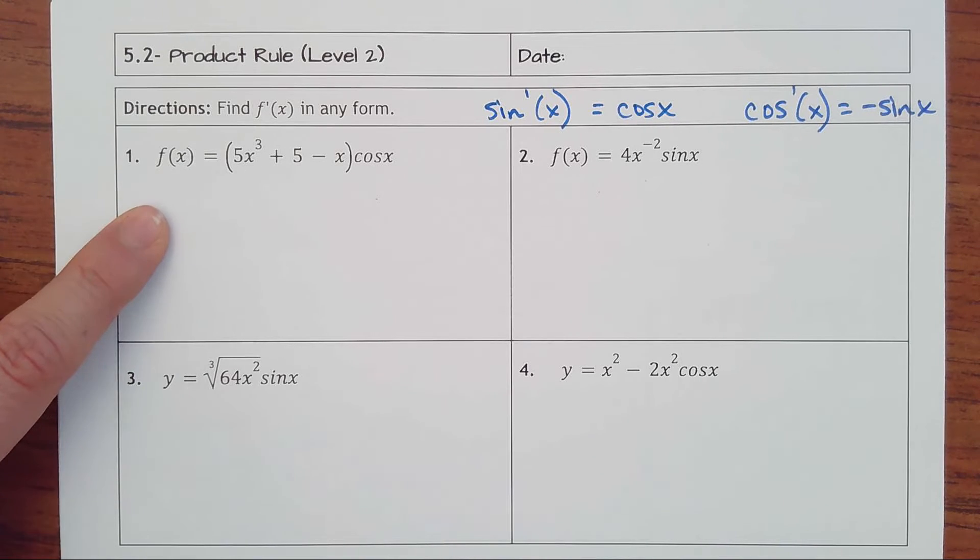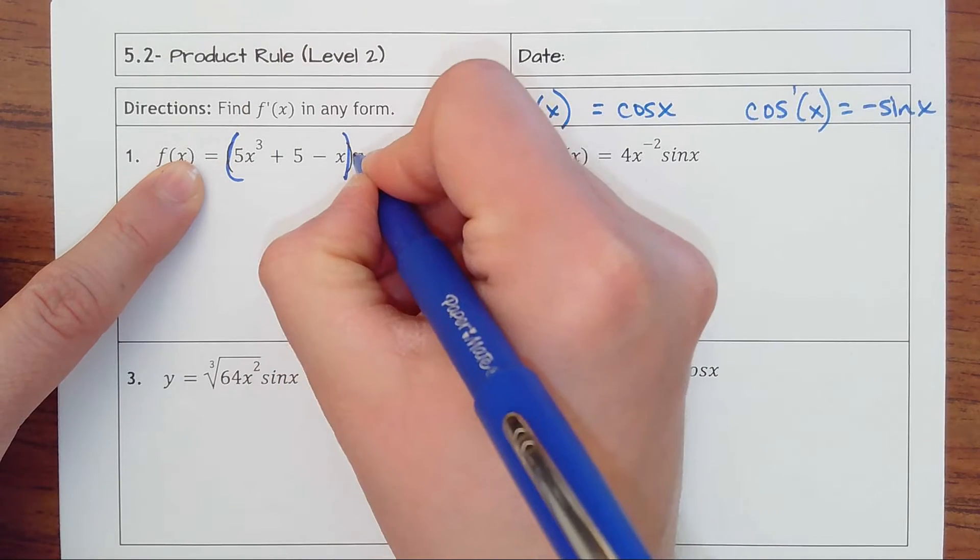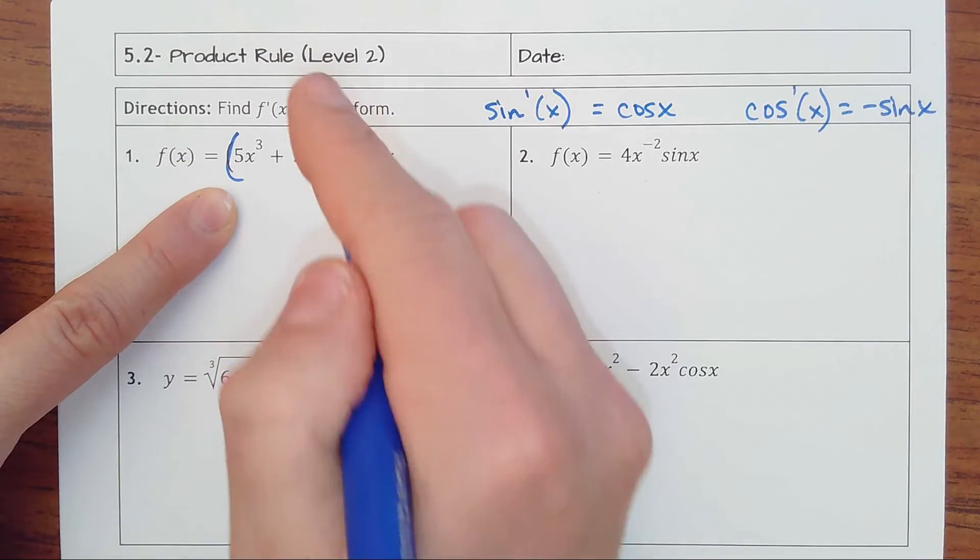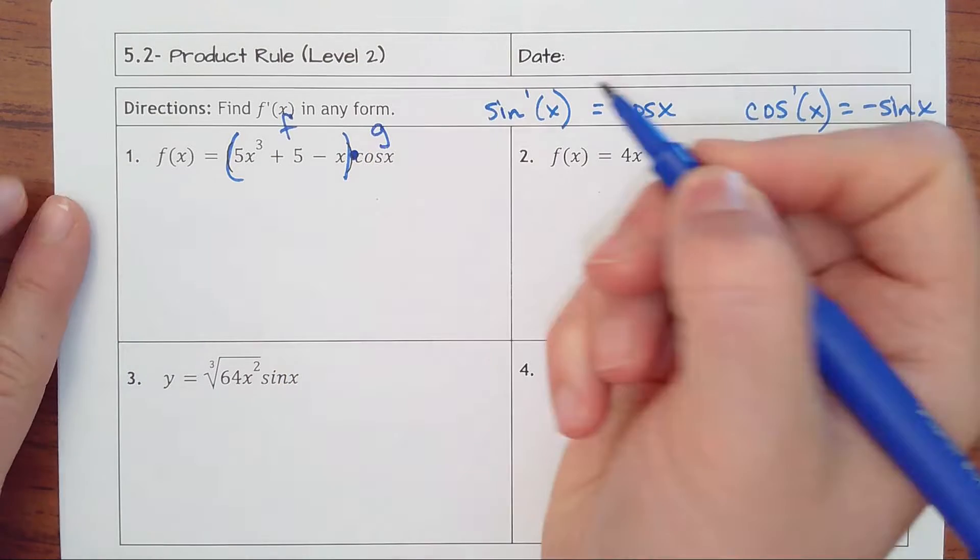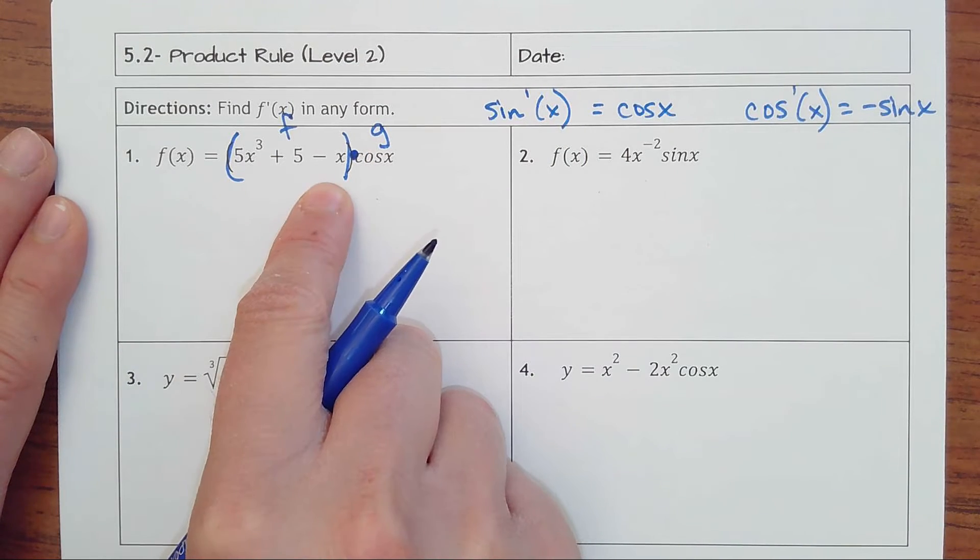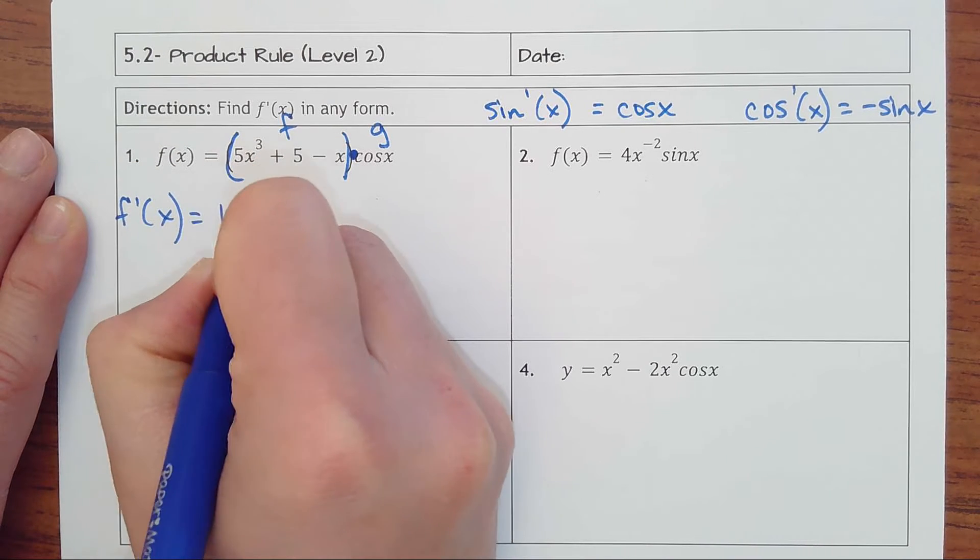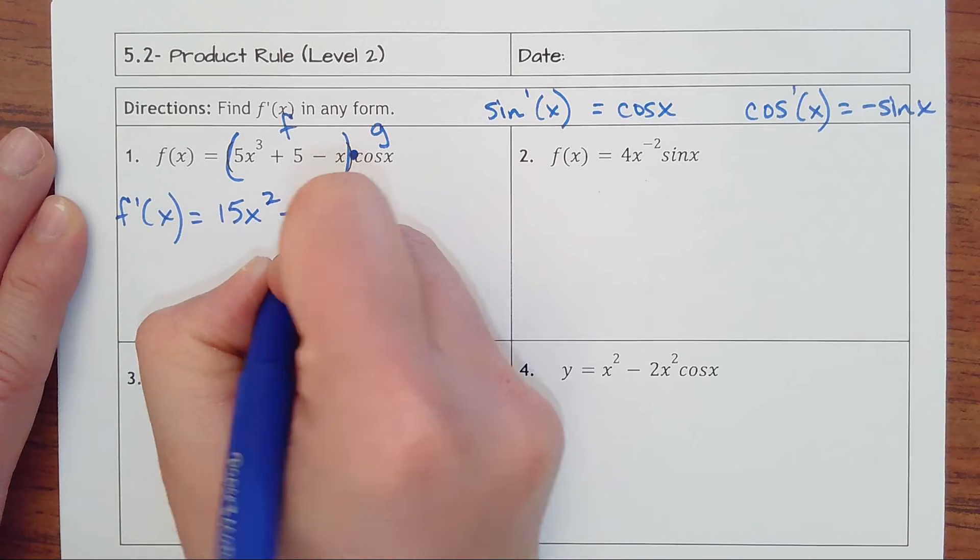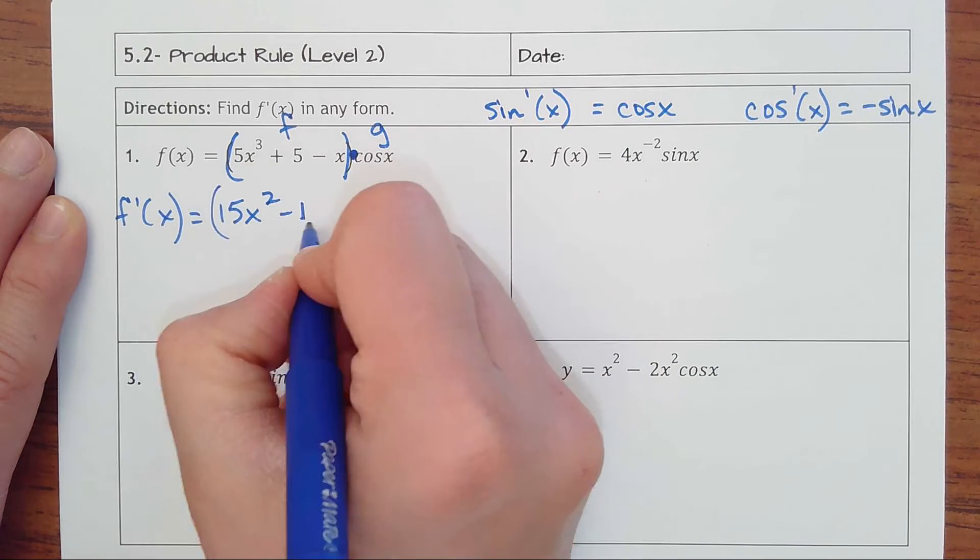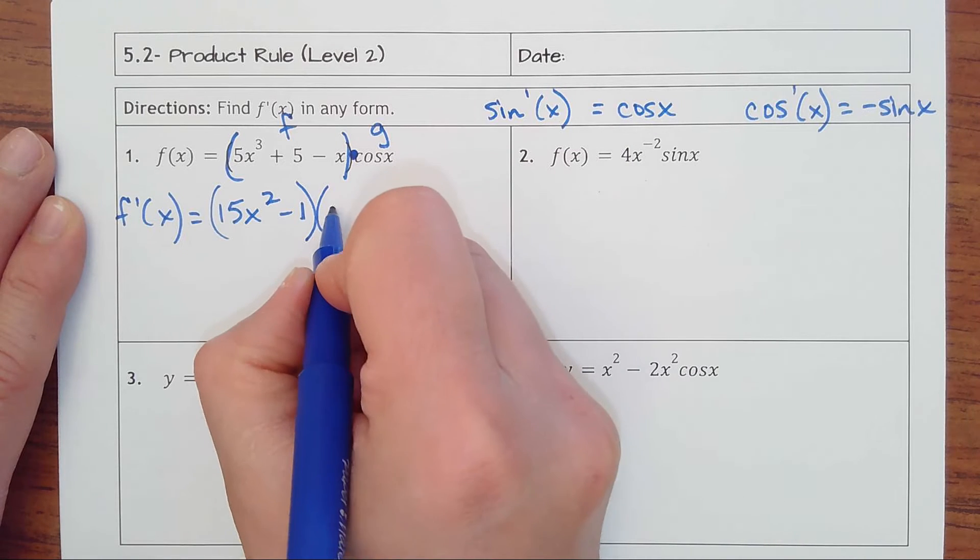Okay, so number one, we've got f(x), and we have this is one function. Here's our multiplication here. So this is our f, this is our g. What I would do first is take the derivative of this, which would be 15x squared, constant would go away, and that would become minus 1. So it's this times cosine of x.